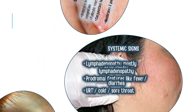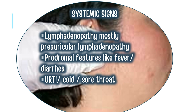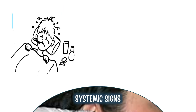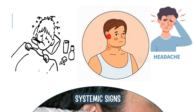Next are the systemic signs seen in viral keratoconjunctivitis. In bacterial conjunctivitis, you usually don't see systemic signs; however, viral conjunctivitis is usually present with systemic features. You can have lymphadenopathy — mostly pre-auricular lymphadenopathy. Some patients might have prodromal features like fever, diarrhea, upper respiratory tract infection, cold, or sore throat. These systemic features are more common with pharyngoconjunctival fever (PCF), one type of adenoviral conjunctivitis presentation. You can also have headaches along with the pre-auricular lymphadenopathy.